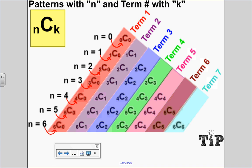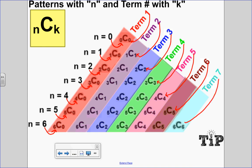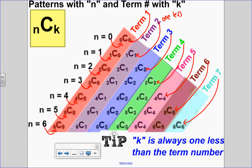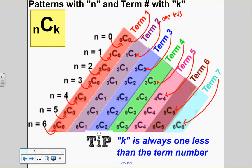The pattern with k: term one has a k value of zero, term two has a k value of one, term three has k equal to two, and so on — it's always one less. So the term number minus one is your k value. k is always one less than the term number.